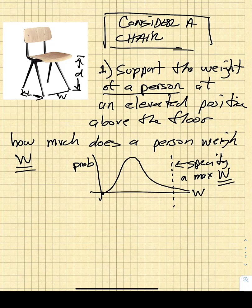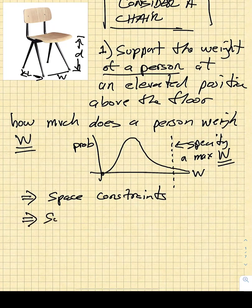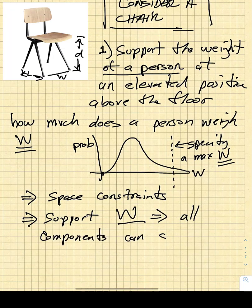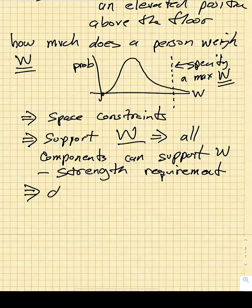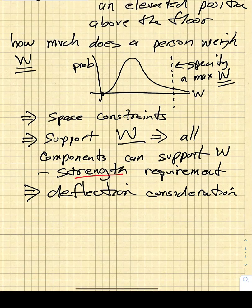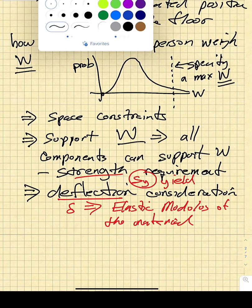We also design this thing to be able to fit underneath a table, so the height of the chair is important — there are space constraints. We have to support the weight of a person reliably, so all components must be strong enough to support W, whatever we decide W is. That gives us a component strength requirement. We also have to think about how much the chair deflects under the applied weight, so there's an important deflection consideration. The strength requirement could be specified by a yield strength, and the deflection requirement is some delta, which arises from the elastic modulus of the material.